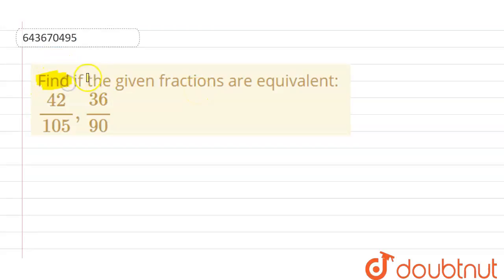We have the question in which we have to find if the given fractions are equivalent. So we need to check that these are equivalent or not, equal or not. 42 divided by 105 and 36 divided by 90.